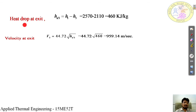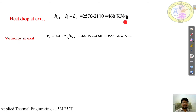Similarly, the heat drop at exit: Hd3 is equal to H1 minus H3, where H1 is 2,570 minus H3 of 2,110, giving 460 kJ/kg. The velocity at exit V3 = 44.72 × √Hd3 = 44.72 × √460, which equals 959.14 m/s.